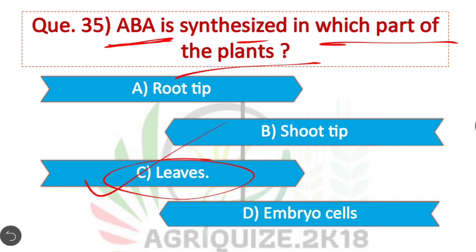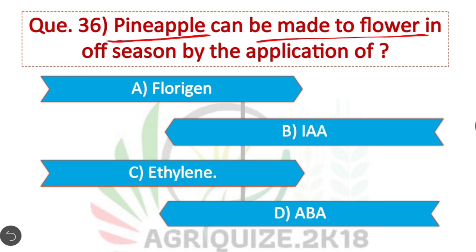Question 36: Pineapple can be made to flower in off-season by application of — Option C is correct: Ethylene. By the application of ethylene, pineapple can be made to flower in off-season.